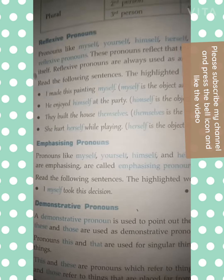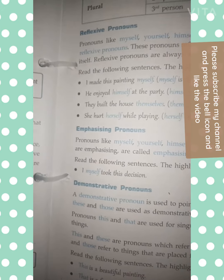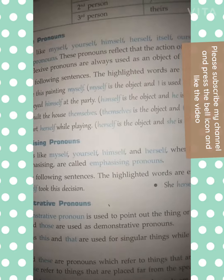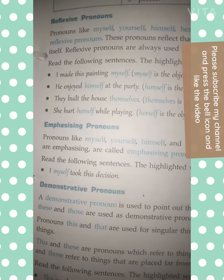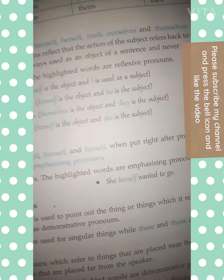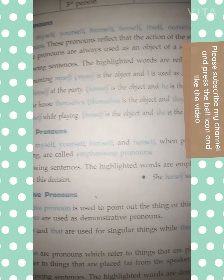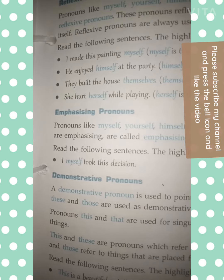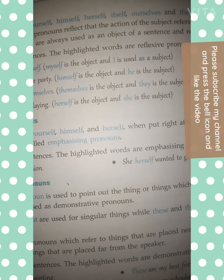Read the following sentences — the highlighted words are reflexive pronouns. 'I made this painting myself' — 'myself' is the object and 'I' is the subject. 'He enjoyed himself at the party' — 'himself' is the object and 'he' is the subject. 'They built the house themselves' — 'themselves' is the object and 'they' is the subject. 'She hurt herself while playing' — 'herself' is the object and 'she' is the subject.